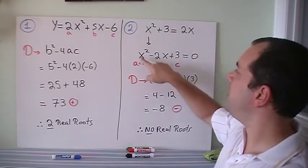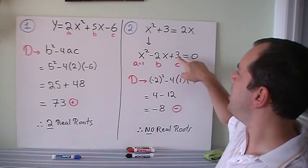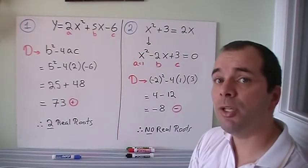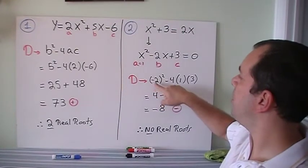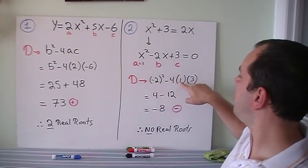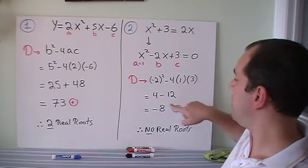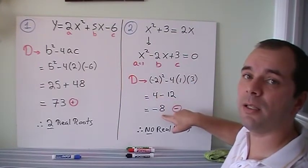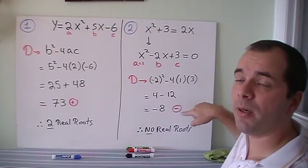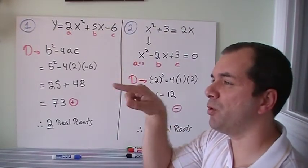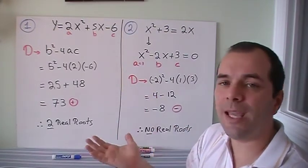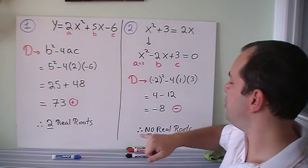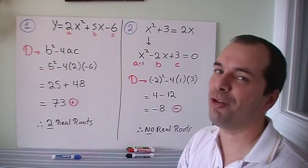a is 1, b is minus 2, c is 3, and then I plug it into the discriminant. As you can see here, minus 2 squared minus 4 times 1 times 3 gives us 4 minus 12, which is negative 8. Because negative 8 is a negative number, I'm going to have to take the square root of a negative number, and that means I can't use quadratic formula. So in short, there are no real roots.